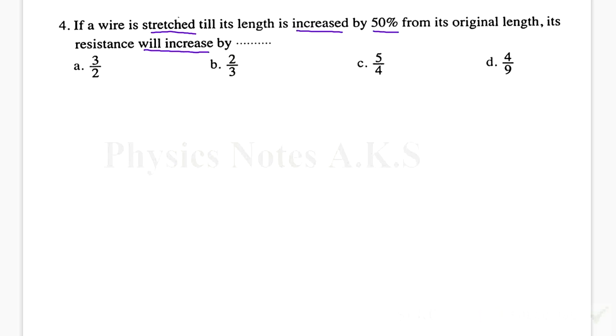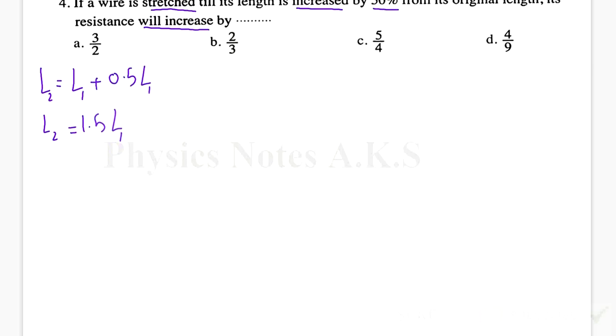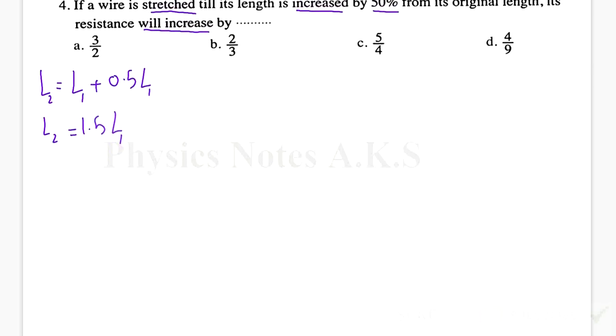Let's write the information. The new length is actually the first plus the increase, fifty percent which is half, 0.5 L1, which means that L2 is actually 1.5 L1.